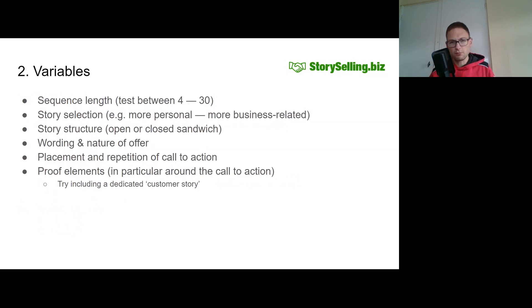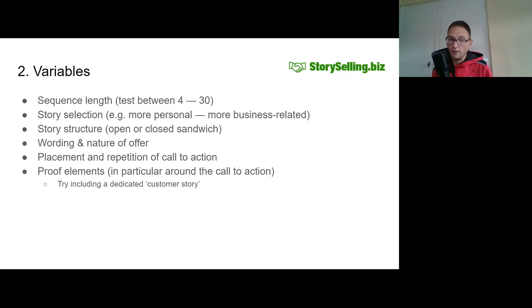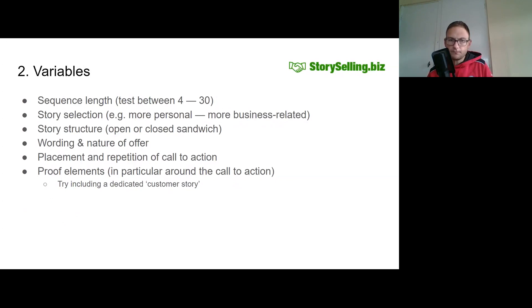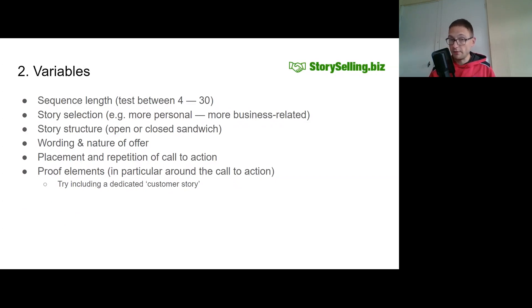This is almost like your onboarding process for new potential clients. By sending an email every day, you force people in some respects to make a decision on whether they know, like, and trust you. By default, I suggest starting with 12 emails in the sequence — that allows some nuance, some development in the stories you tell, and lets you place four emails in each act. However, this is a working assumption. The minimum you could include is four emails: one email in each act and then a call to action email at the end.